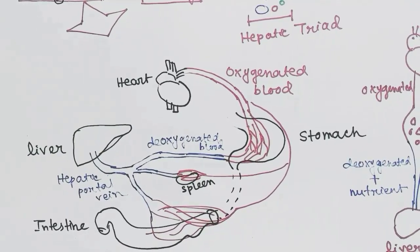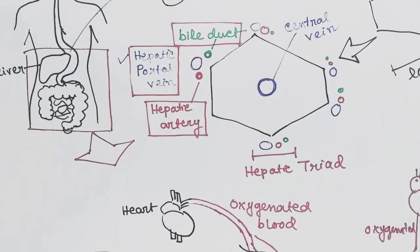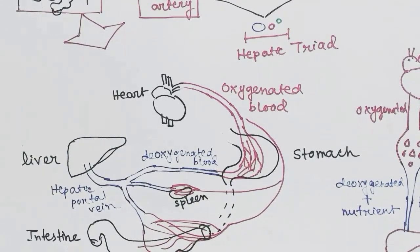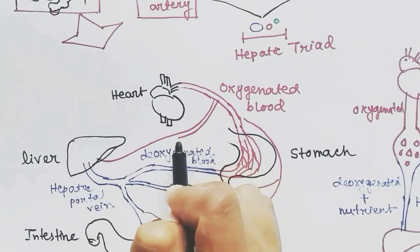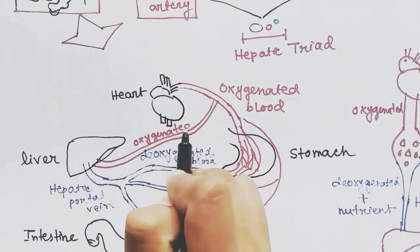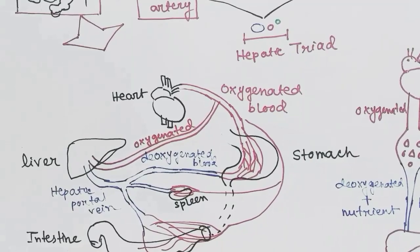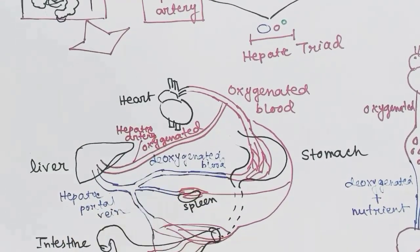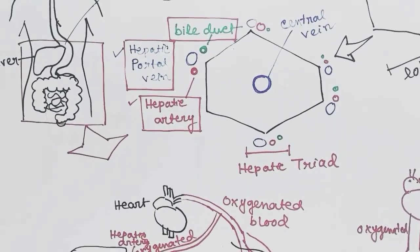This vessel carrying deoxygenated, nutrient-rich blood that enters the liver is called the hepatic portal vein. Now coming to the hepatic artery: one more blood vessel coming from the heart with oxygenated blood will enter the liver to supply oxygen to the liver cells. That vessel is called the hepatic artery.